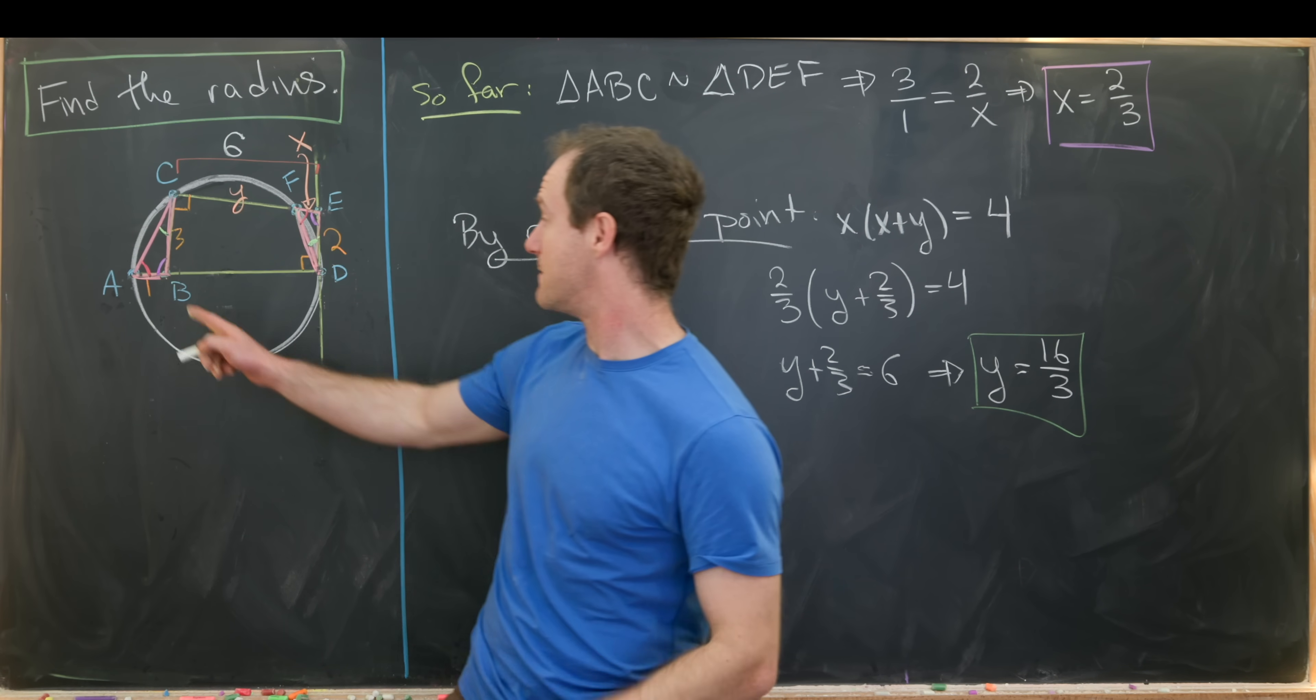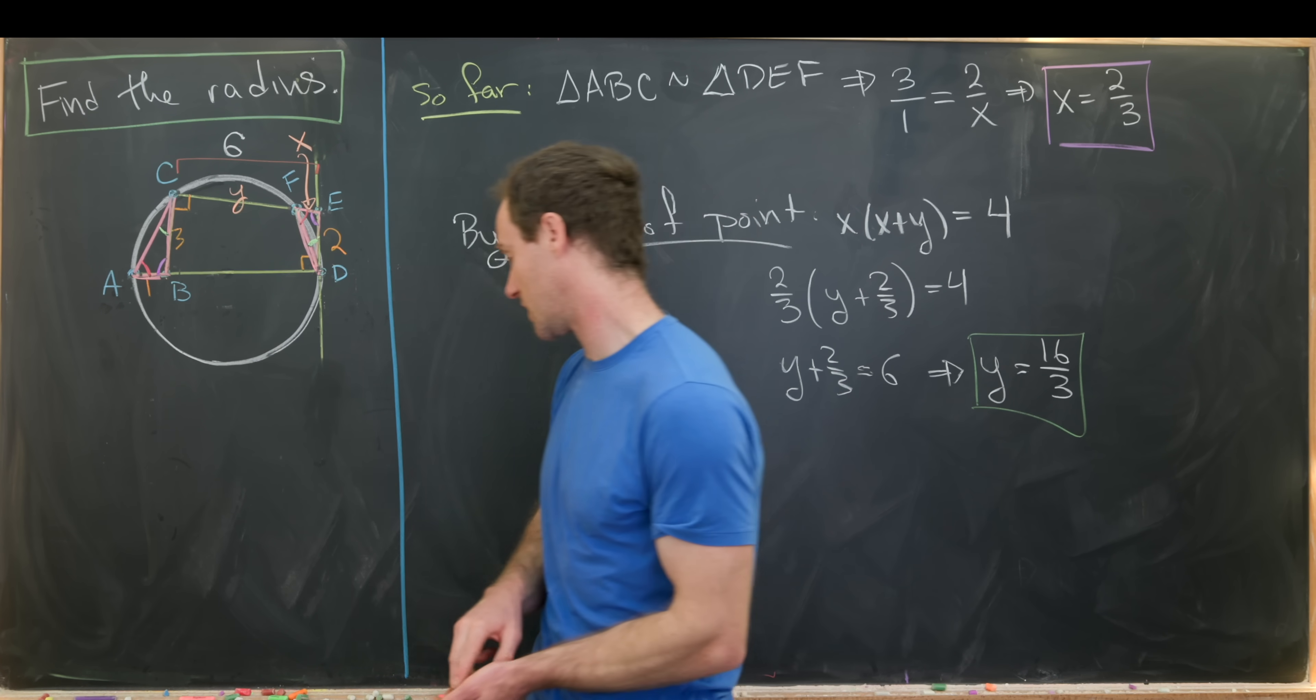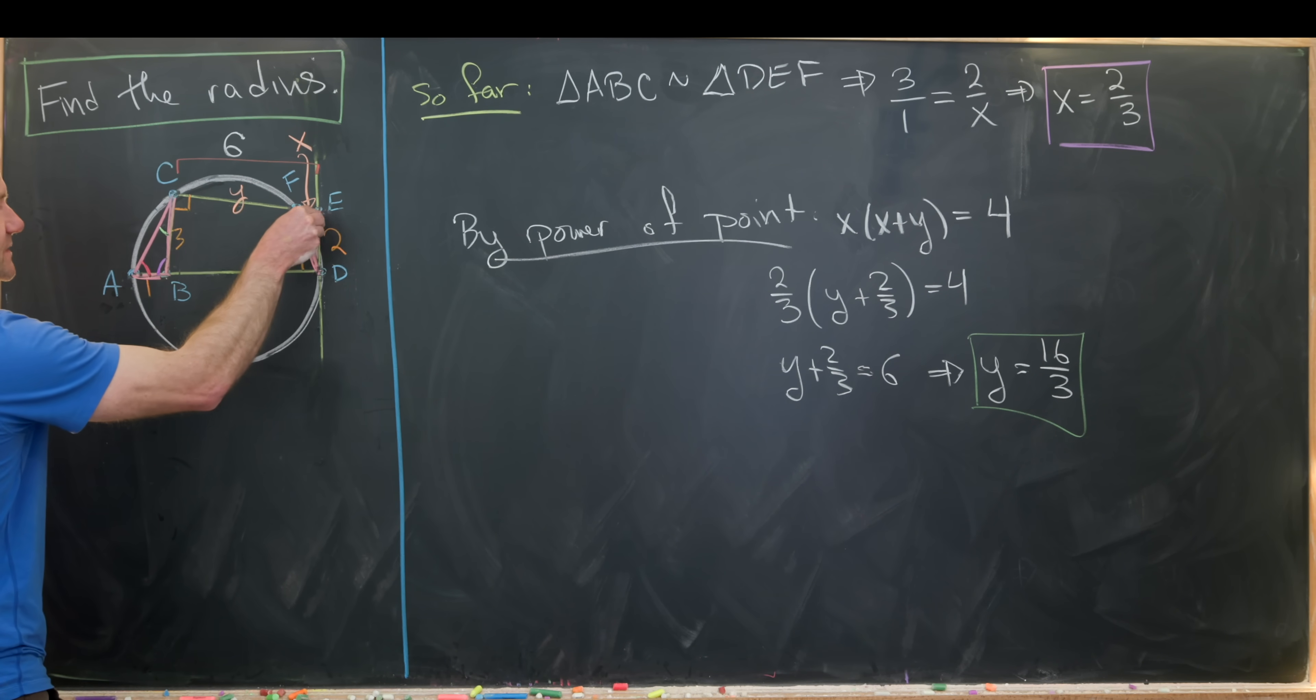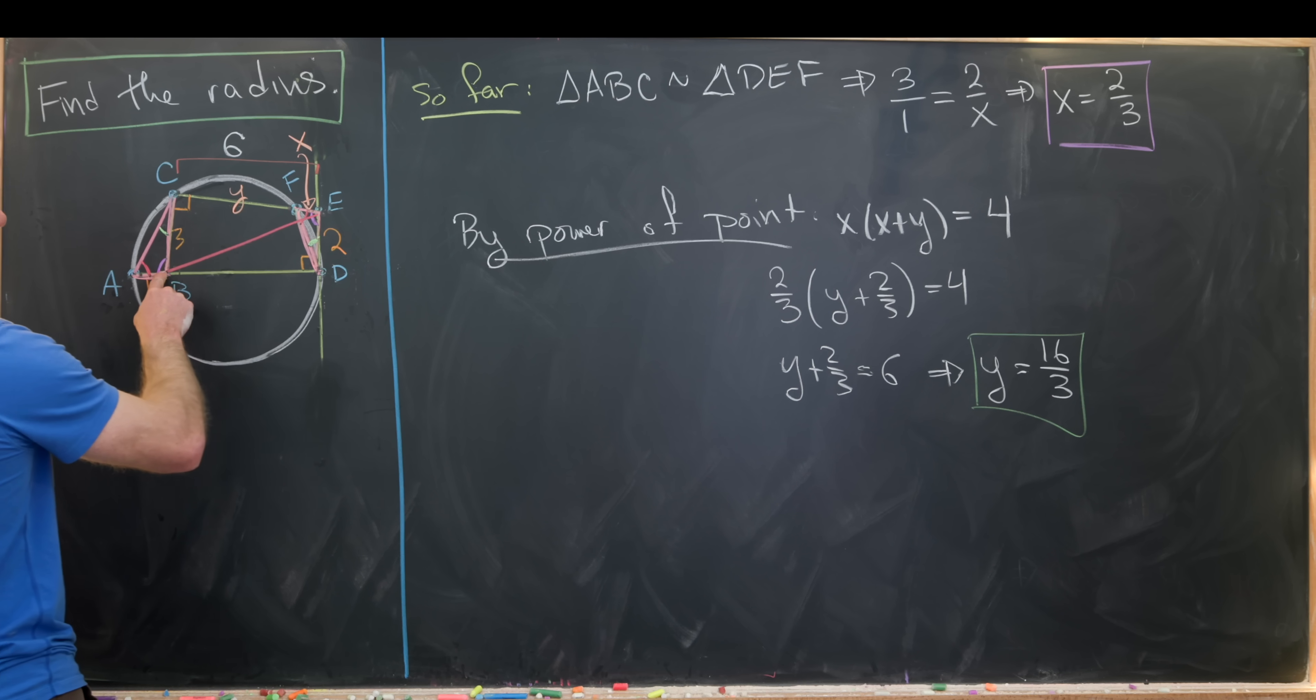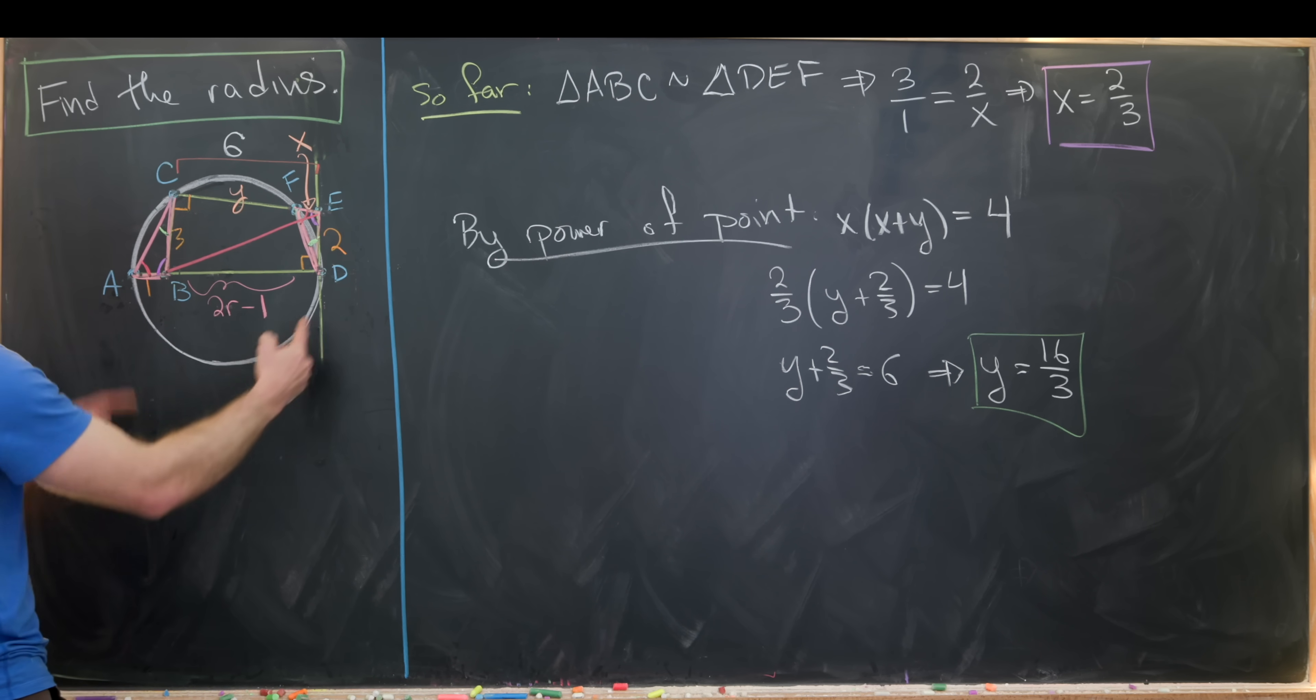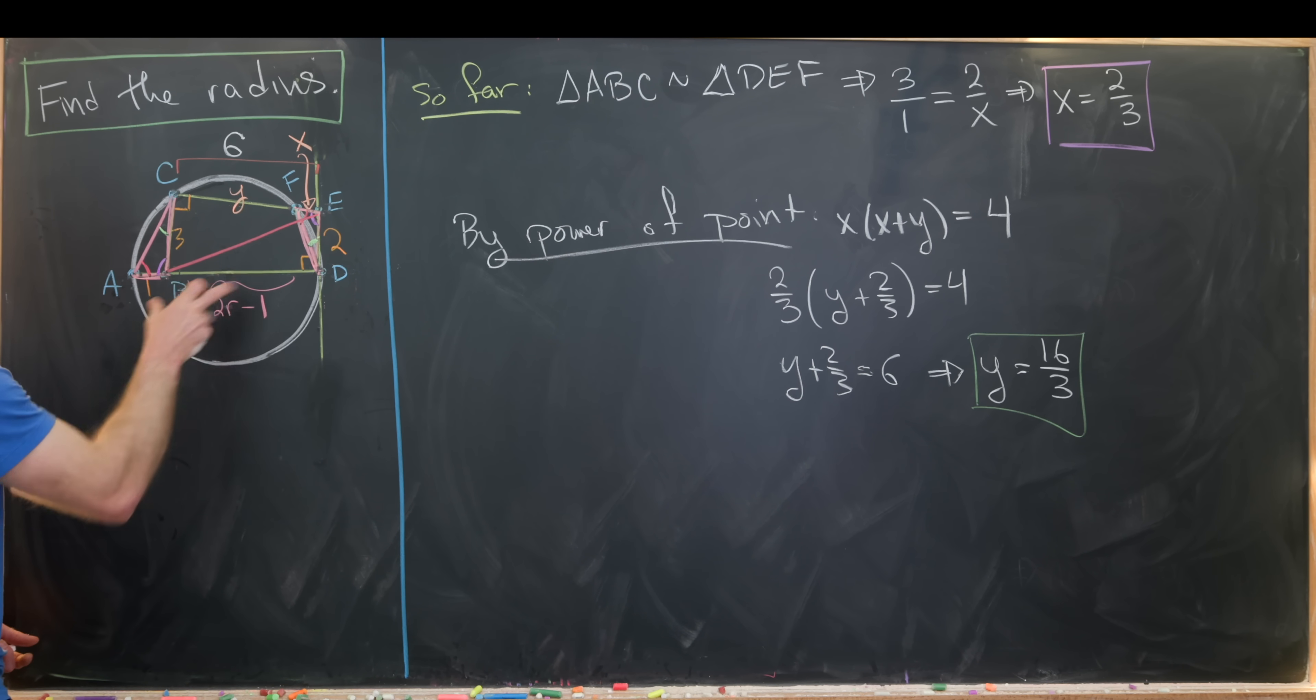And now we'll finish this off by measuring the distance from B to E two ways with two different right triangles. So let's maybe put B to E in here. Notice that gives us this right triangle BDE, and then it also gives us this right triangle involving B, C, E. And we know the length of each of those. Well, we don't know the length of this, but we know it's exactly 2 times the radius minus 1 because we know this is a diameter.